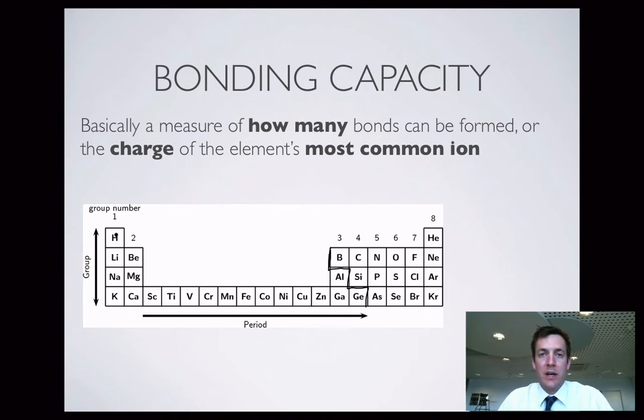And hopefully we're all happy by now, at the start of year 12, that group 1 elements form 1 plus ion, so their ionic bonding capacity is 1. Group 2 elements form 2 plus ions, so their ionic bonding capacity is 2, and so on.